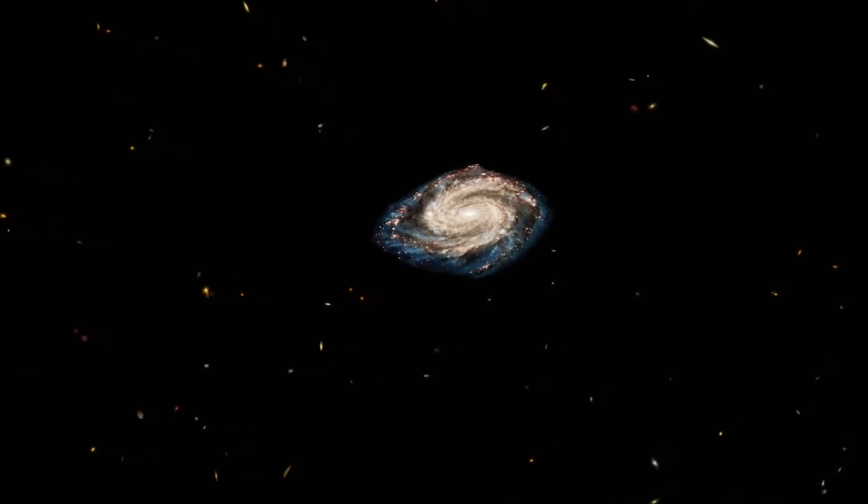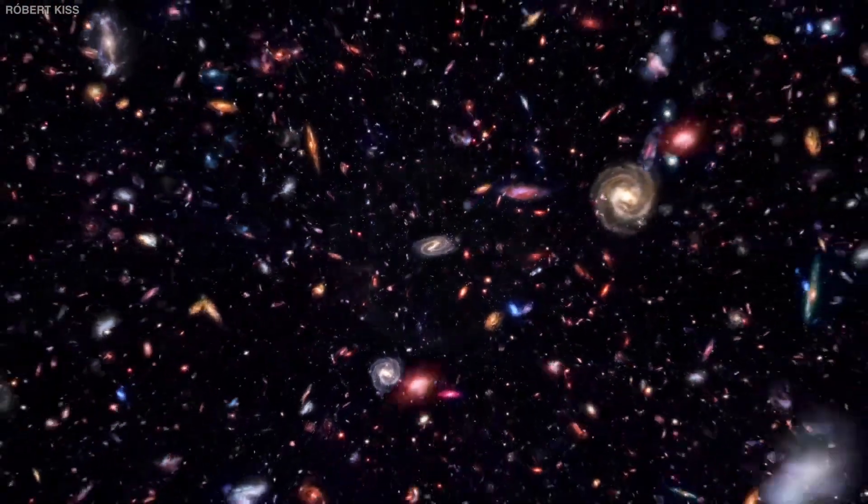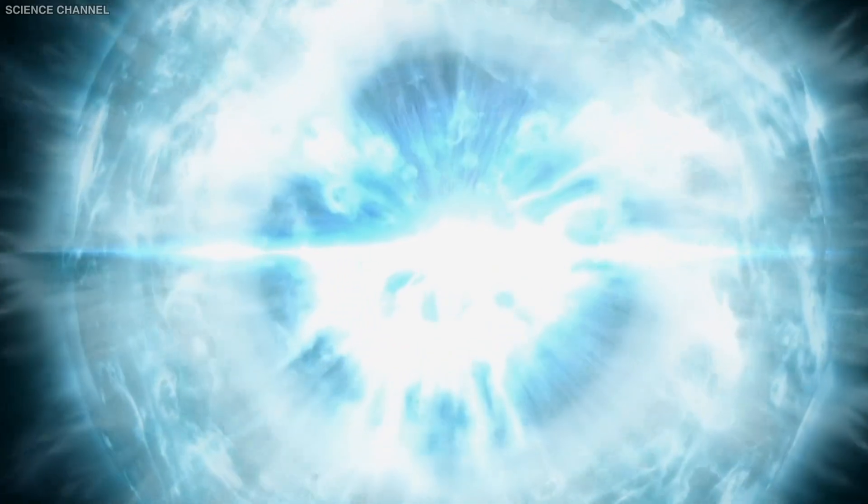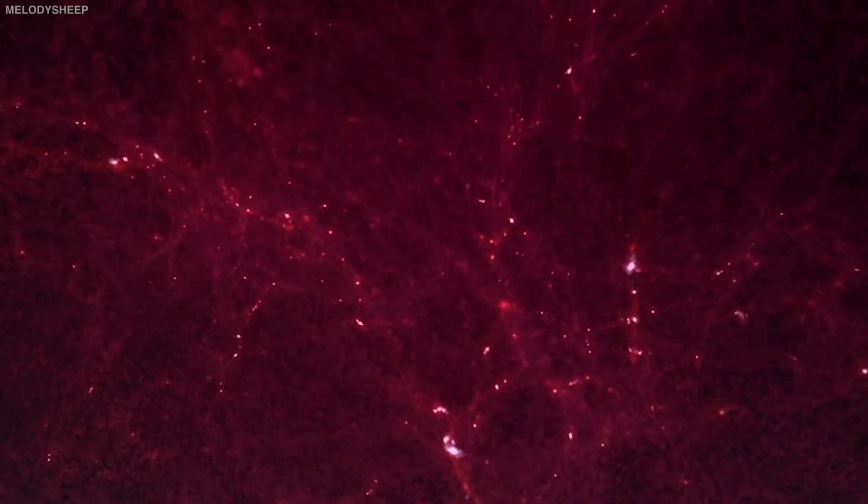In essence, if things were moving apart, it signified that previously everything had been closer together. You see, when the universe first began, it was only hot microscopic particles intermingled with light and energy, according to the Big Bang Theory.